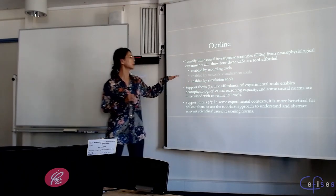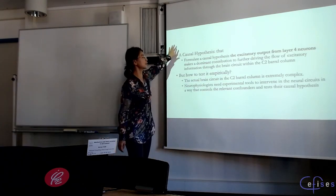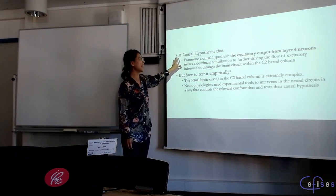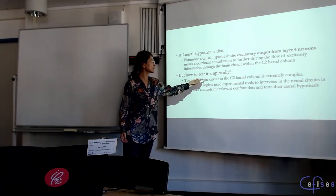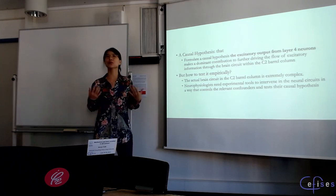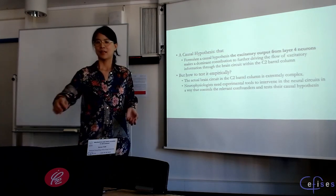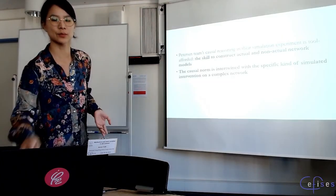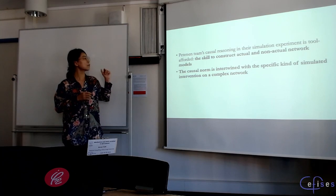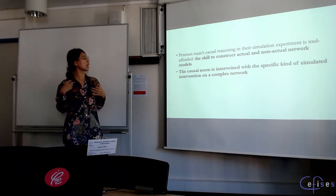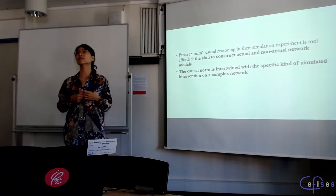The second case shows how causal reasoning is enabled by simulation tools. Skipping some details: the team formed a causal hypothesis but faced the problem that the actual brain circuit in mice is very complex — there was no tool to intervene on such a complex neural circuit. The simulation tool helps. This scientific team's causal reasoning is afforded by a tool that allows them to construct actual and non-actual network models of neurons. The causal norm is intertwined with a specific kind of simulated intervention that only this tool makes possible.